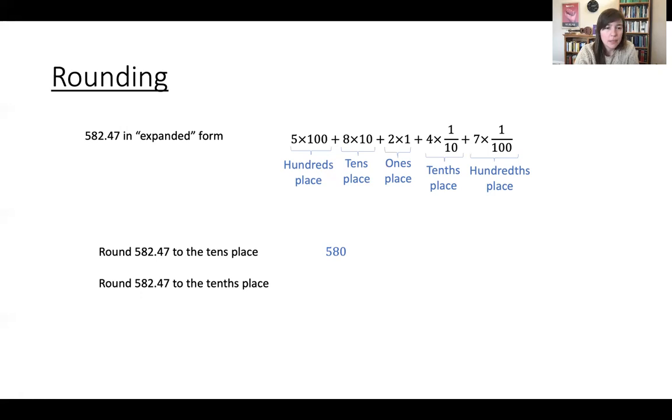In this case, the number to the right of the tenths place is seven. So we add one to four and we turn the seven into a zero. 582.47 goes to 582.5. Okay, so hopefully this is just review and kind of getting your wheels spinning on this.